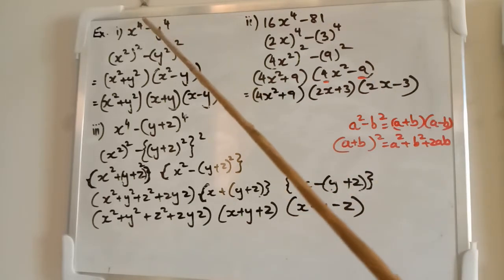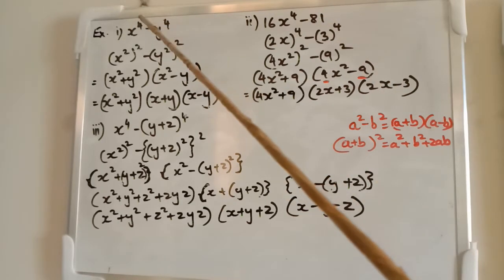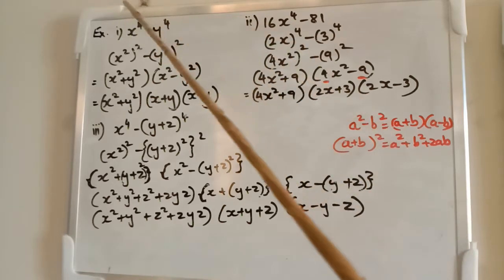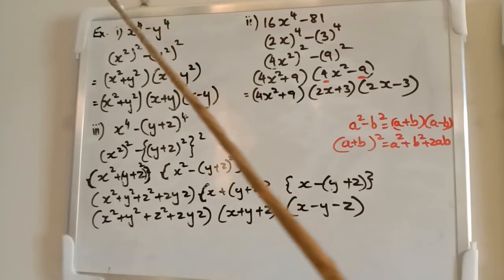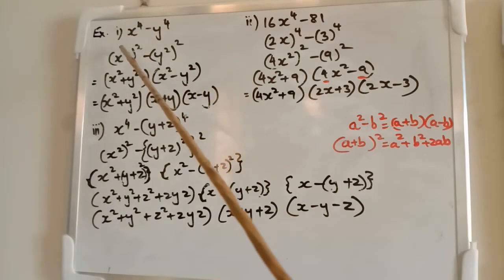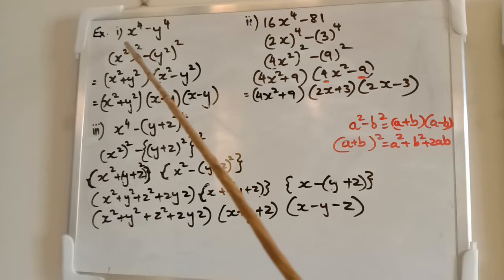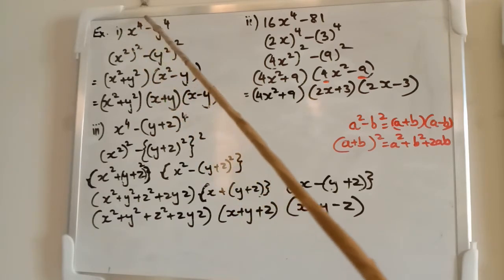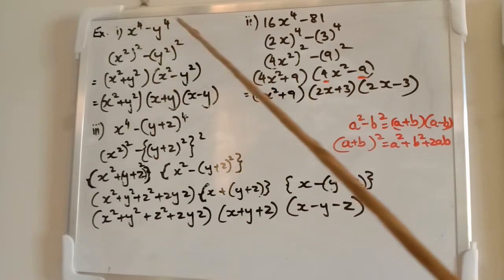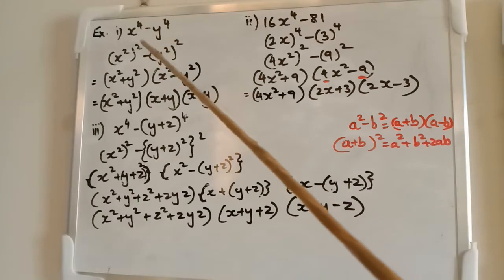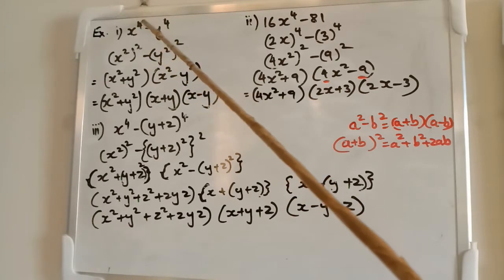If you have any even number of powers — say 4, it could be 6, 8, 10, 12 — all of those can be handled. We will keep outside 2 and whatever be the multiple of it, the other factor we will keep inside. For example, 3 into 2 is 6, 5 into 2 is 10. It can be x raised to the power of 10 minus y raised to the power of 10.